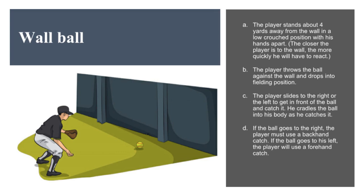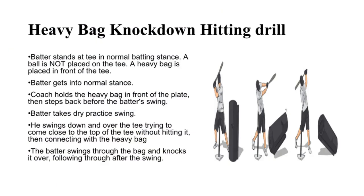If the ball goes to the right, the player must use a backhand catch; if to the left, a forehand catch. Heavy Bag Knockdown Hitting Drill: The batter stands at the tee in a normal batting stance without a ball on the tee. A heavy bag is placed in front of the tee. The coach holds the heavy bag in front of the plate, then steps back before the batter's swing. The batter takes a dry practice swing, swings down and over the tee close to its top without hitting it, connects with the heavy bag, and knocks it over, following through after the swing.